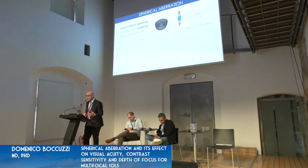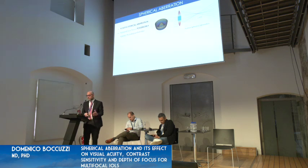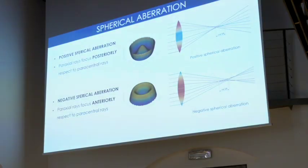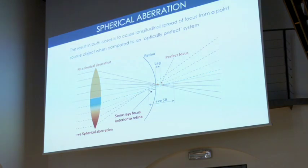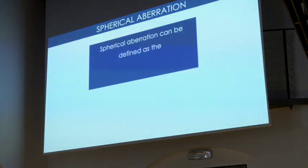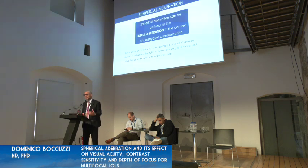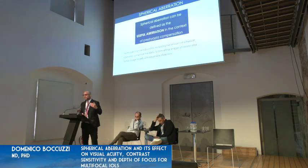We can have positive spherical aberration in which the paraxial, meaning the central rays, focus posteriorly with respect to the paracentral rays. We can also have negative spherical aberration in which the opposite occurs — the paraxial rays focus anteriorly with respect to the paracentral rays. Spherical aberration can be defined as a useful aberration in the context of presbyopia correction, and manipulating it can induce a kind of multifocality, increasing the depth of focus and the possibility to get focus for both far and near images.